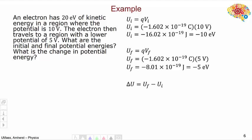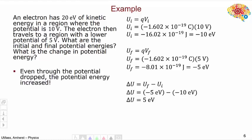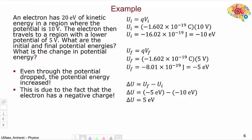Now let's think about the change in potential energy: U_final minus U_initial. We solved for our final as −5 eV and our initial as −10 eV, so the result is a change of positive 5 eV. Even though the potential decreased, the potential energy actually increased. This is due to the fact that the electron has a negative charge.